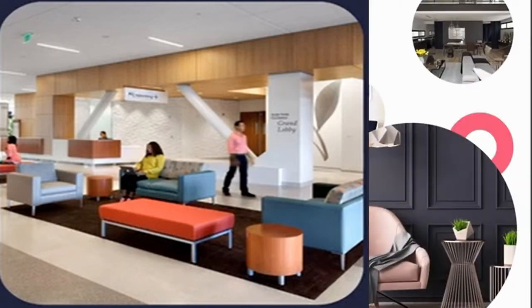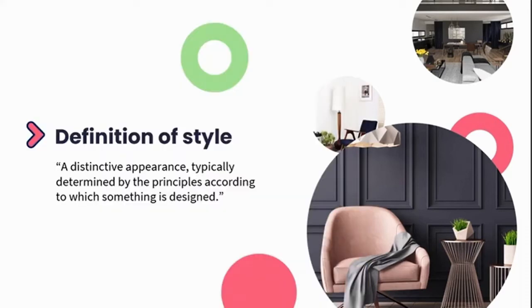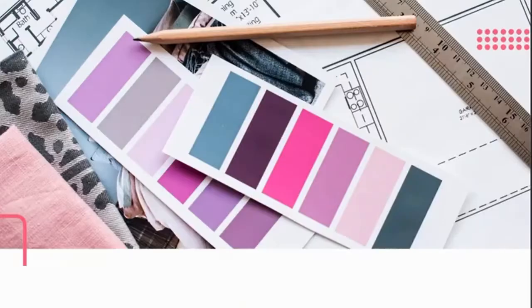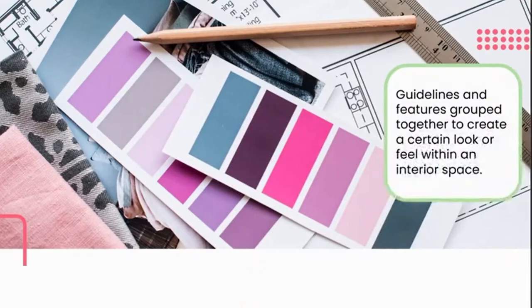In order to get a meaning of style, we jump to the dictionary definition, which is a distinctive appearance typically determined by the principles according to which something has been designed. The word style comes into play in so many areas of our daily lives — in fashion, in cooking, and in the general way we do things on a daily basis. This definition of style is the same concept when it comes to the way in which we design our interior spaces. When we refer to the style of an interior space, it relates to a set of basic rules, guidelines, and features grouped together to create a certain look or feel within that space.